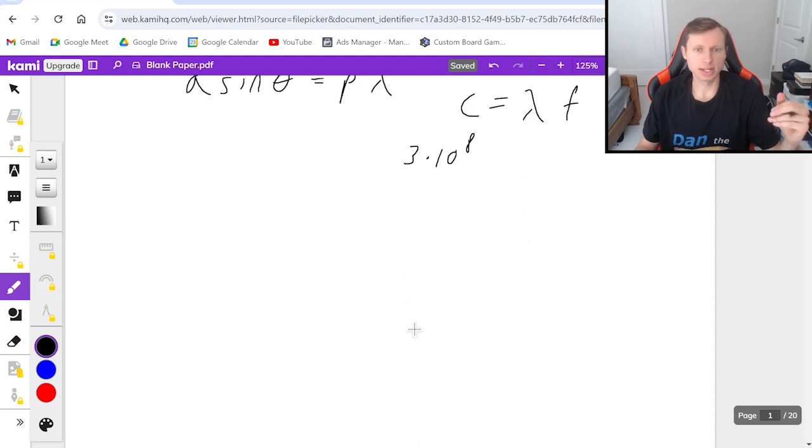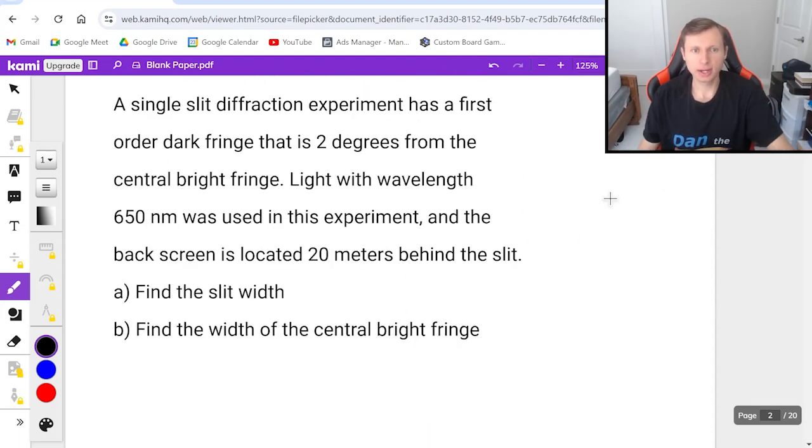Now let's look at an example problem. A single slit diffraction experiment has a first order dark fringe that is two degrees from the central bright fringe. Light with wavelength 650 nanometers was used, and the back screen is located 20 meters behind the slit. Part A, find the slit width. Part B, find the width of the central bright fringe.